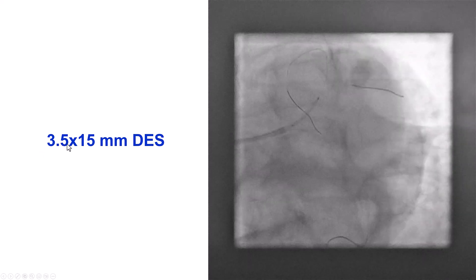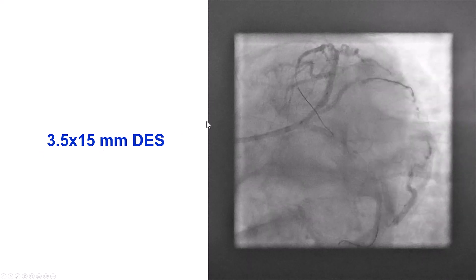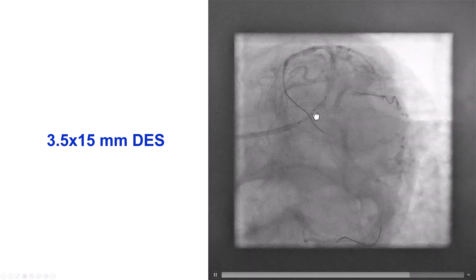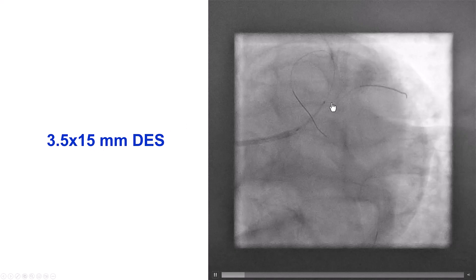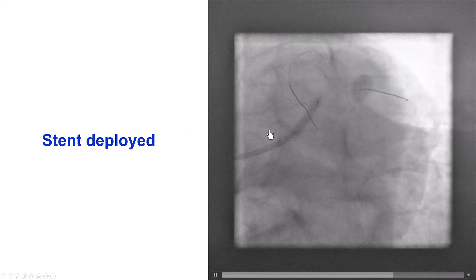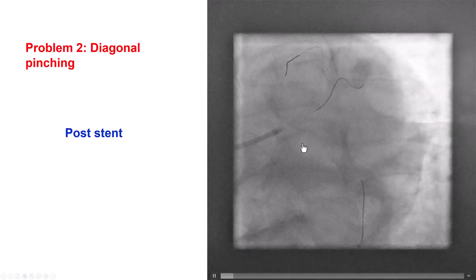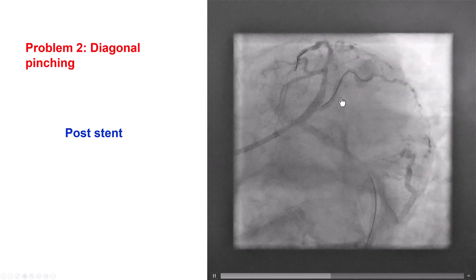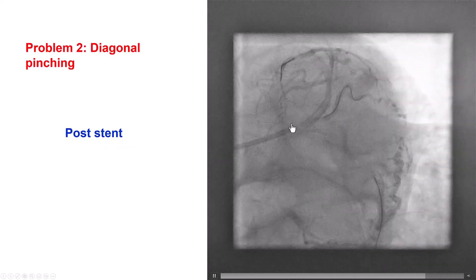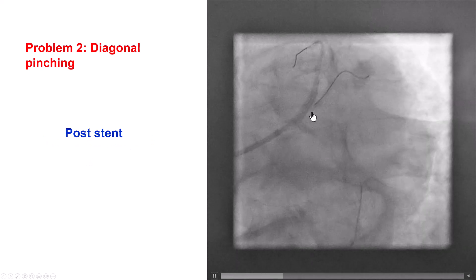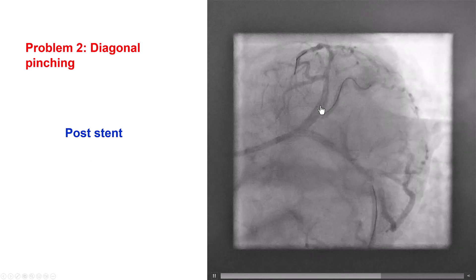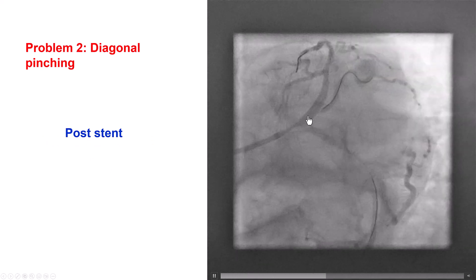This is the stent — a 3.5 by 15 mm drug-eluting stent. We are jailing the wire into the diagonal. We placed the stent and did have a good result into the LAD. The dissection has been covered.